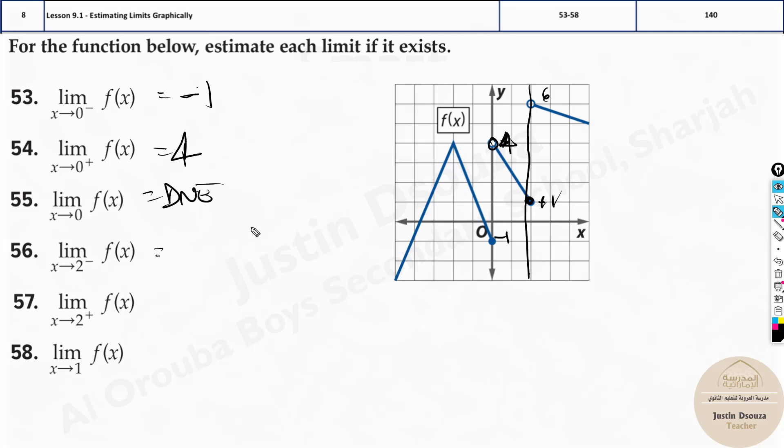But they have not asked at 2. But you just write, from the left side, it is positive 1. From the right side, it is 6. They are not the same. If they had asked you the limit as x approaches 2, f of x, you should tell it does not exist.